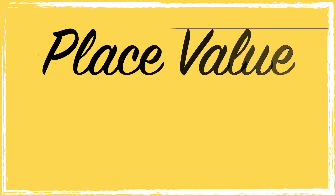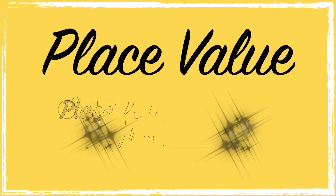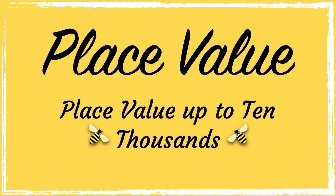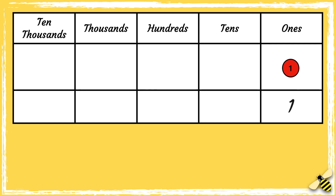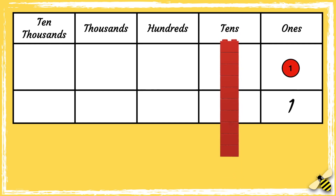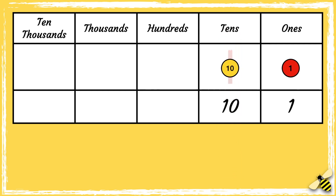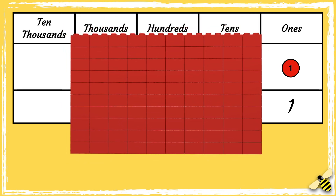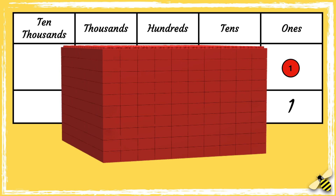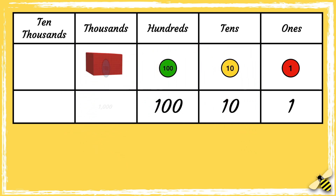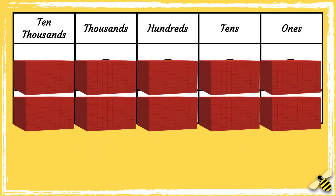In today's video we're going to be looking at ten thousands, thousands, hundreds, tens and ones. Here is a place value grid, so we have the ones, the tens, the hundreds, the thousands and the ten thousands.